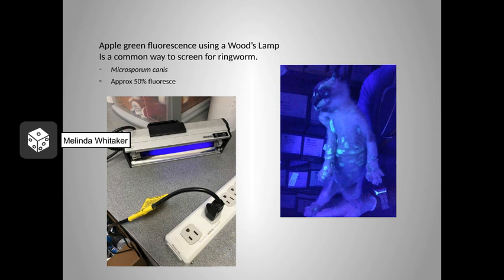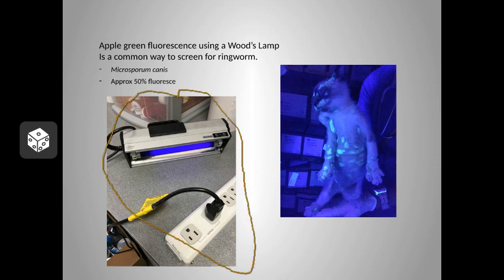Apple green fluorescence using a Wood's lamp is a common way to screen for ringworm. However, not all dermatophytes fluoresce in this manner. In reality, the only clinically significant one in veterinary medicine that does so is Microsporum canis, and not all strains of Microsporum canis glow. We really don't know which strains glow or what factors influence this fluorescence. Battery-operated Wood's lamps are not effective to screen for ringworm; the shelter should have a good quality Wood's lamp that plugs in. I've included a picture of our Wood's lamp at the shelter and a picture showing that apple green fluorescence on a cat.